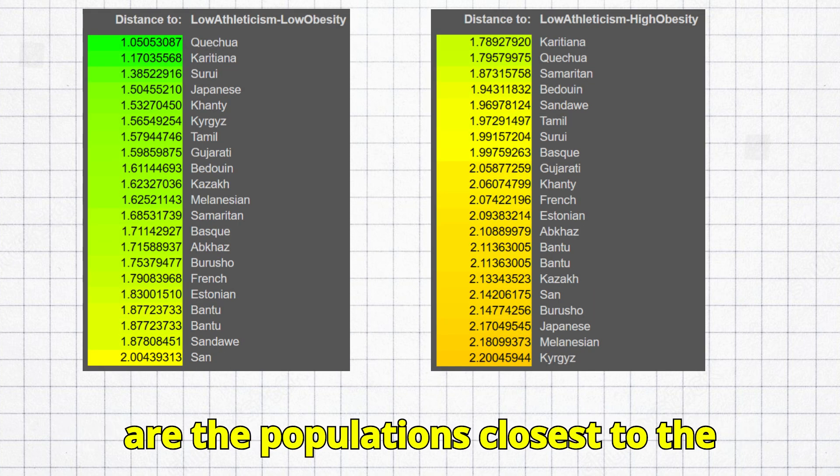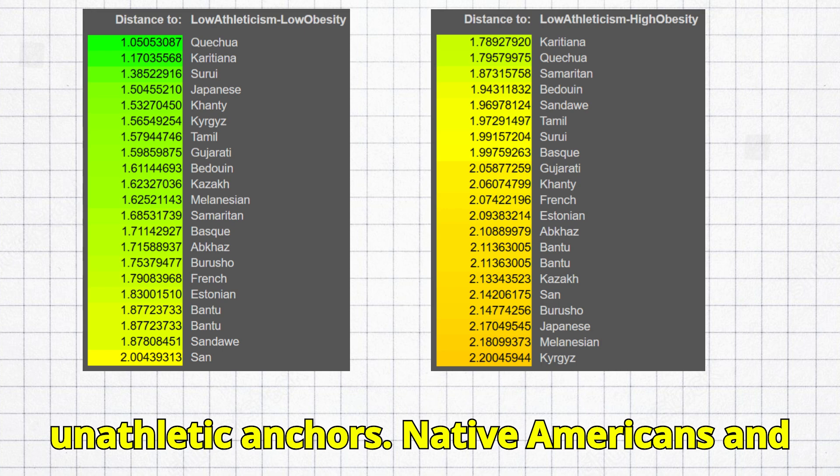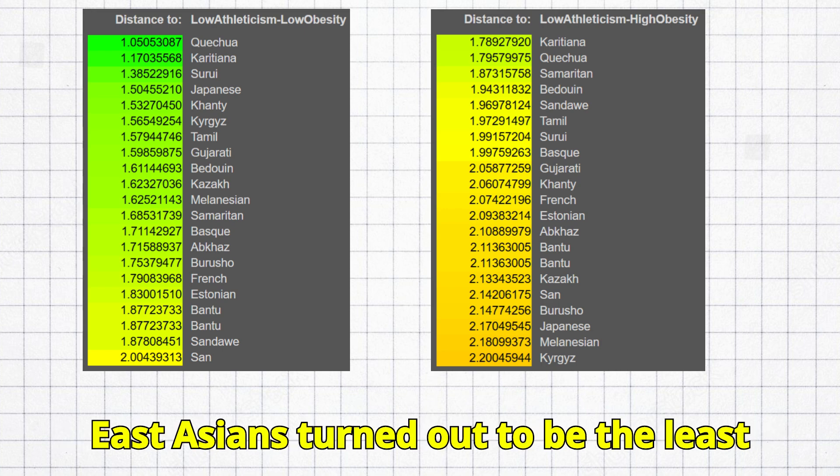Here are the populations closest to the unathletic anchors. Native Americans and East Asians turned out to be the least athletic.